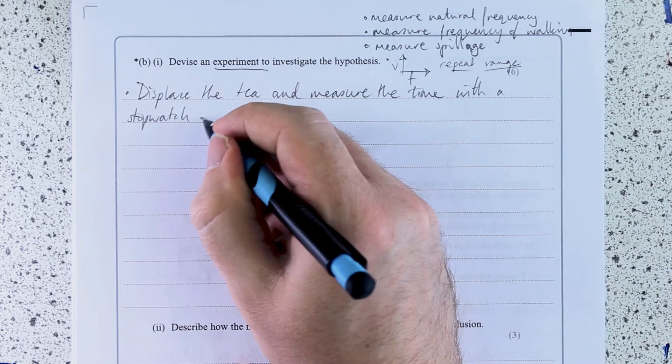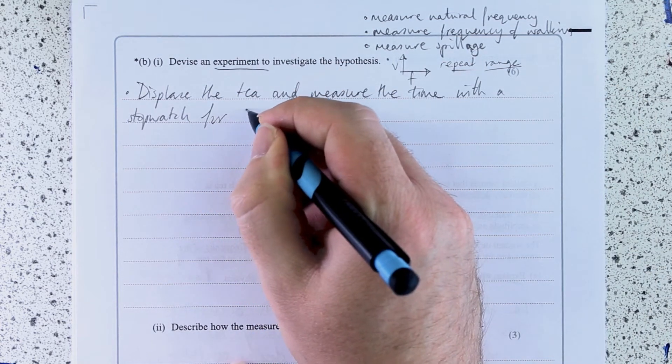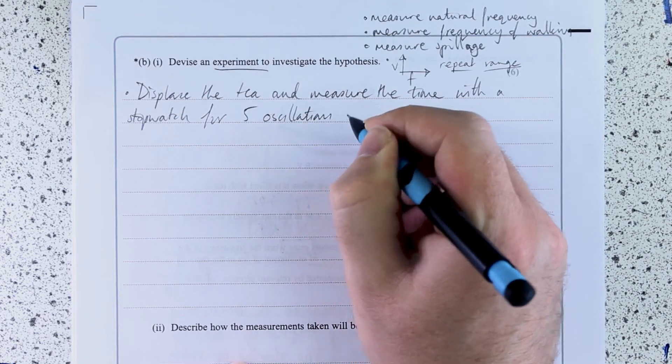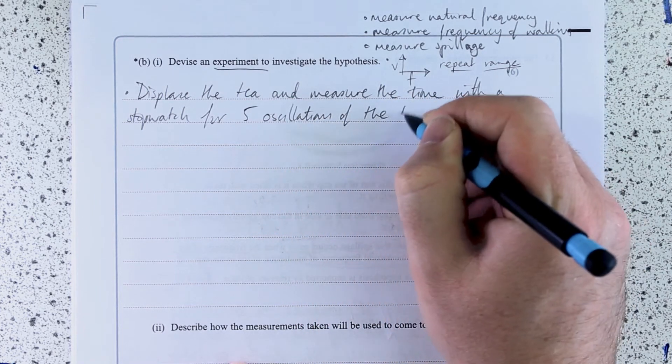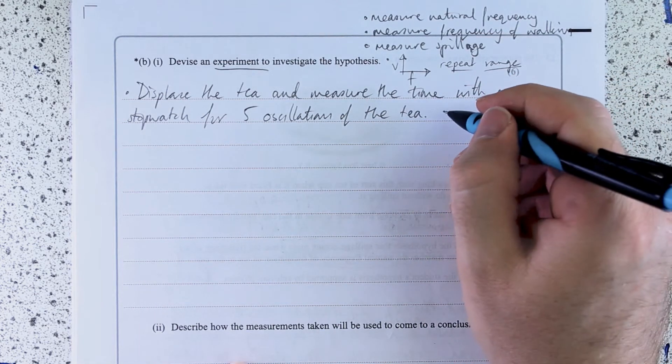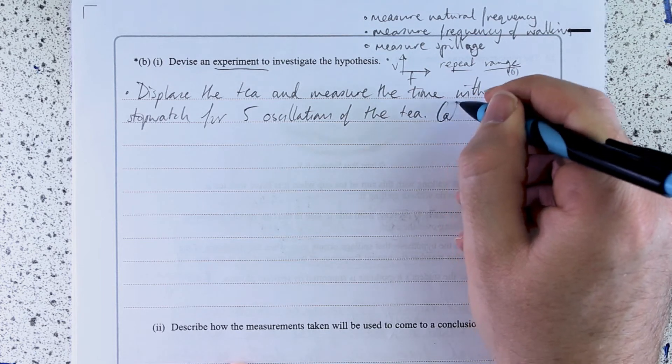The time for, let's say, five oscillations of the tea. Then I can calculate frequency with one over T.